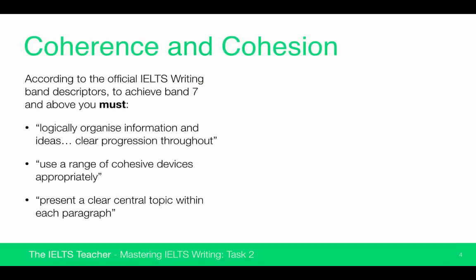As for coherence and cohesion, this is all about having the essay flow nicely. According to the band descriptors, to achieve band 7 and above, you must logically organise information and ideas — there must be a clear progression throughout. You need to use a range of cohesive devices appropriately, and you must produce a clear central topic within each paragraph.